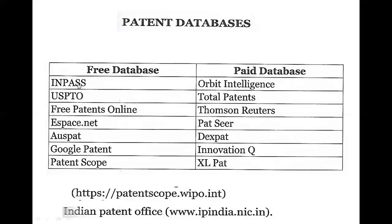The patent database has been released on PC2GO. This patent database has free as well as paid options. The free database is available to disclose all patent documents related to your particular invention available in the world. It includes INPAS — Indian Patent Advanced Research System — and USPTO, the United States Patent and Trademark Office. There are Indian patents and US patents available. These free patent databases have some limitations. The paid databases include Orbital Intelligence, Total Patents, Coms and Reuters, etc.